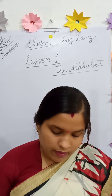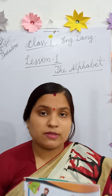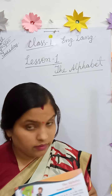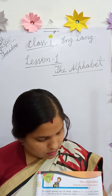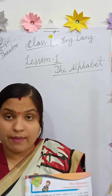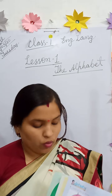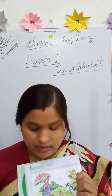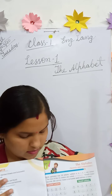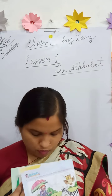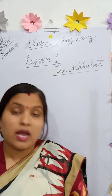In our previous video, I have explained Lesson 1 — the alphabet, vowels, consonants, capital and small letters. I have also told you that you have to fill page number 5 and 6. I hope you all have filled your book, page number 5 and 6.